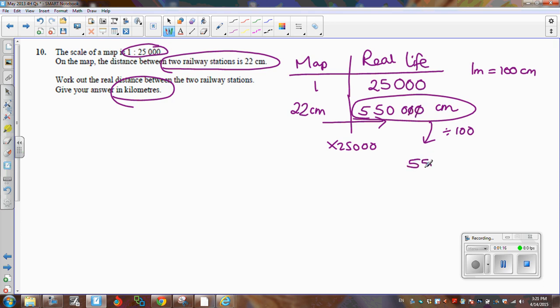So that's going to give me 5,500 meters. And if I want to then change it into kilometers, I know that one kilometer is 1,000 meters. So I'm going to change from meters into kilometers.